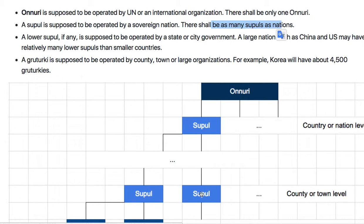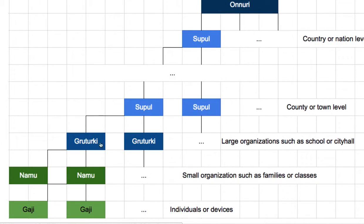There may also be lower-level Suphuls. Large countries like China or the USA may be better divided by region into smaller parts, and they can allocate another Suphul for each state. But small countries like Sweden, Switzerland, or Belgium may just have one Suphul. Grutegi is the lowest-level geographical area — in Korea it's called Dong, but in the USA or other countries it may be a county or a town.